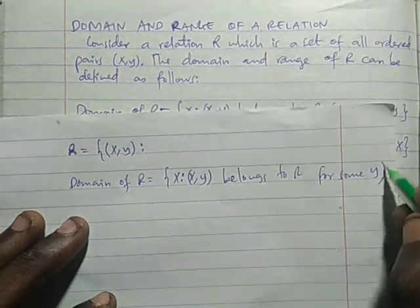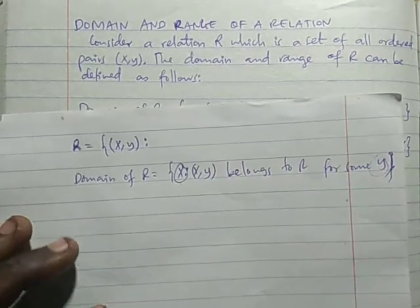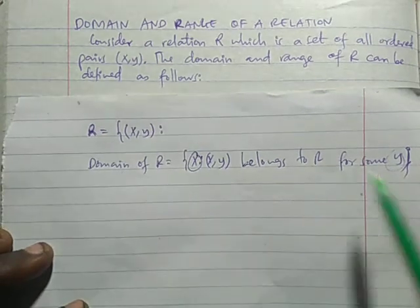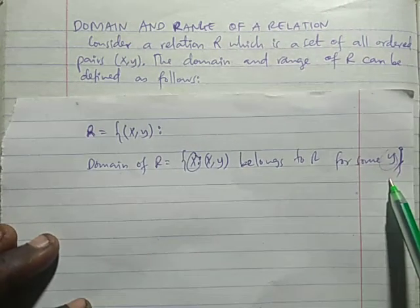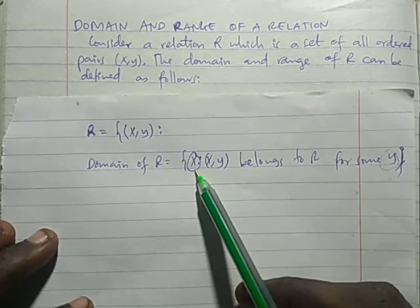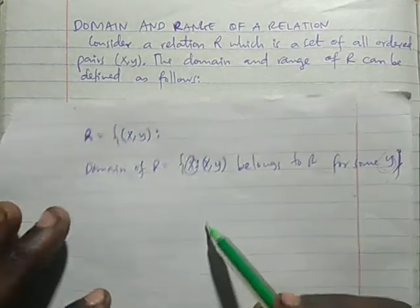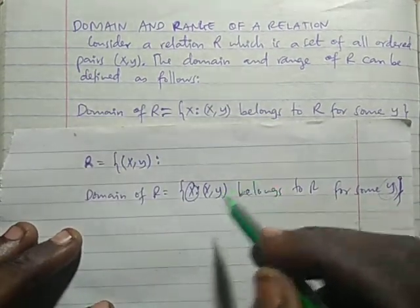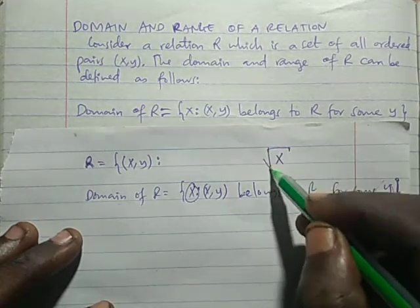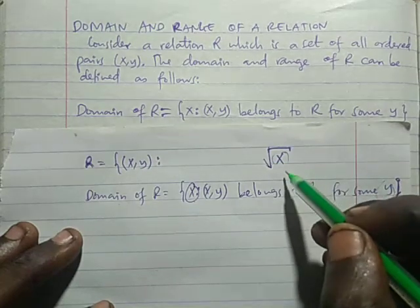Manake, there are some values of X that can generate Y — those go into the domain. Sio zote. Because there are other values of X which, when substituted, do not produce a Y. Only values of X that can produce a Y belong to the domain.